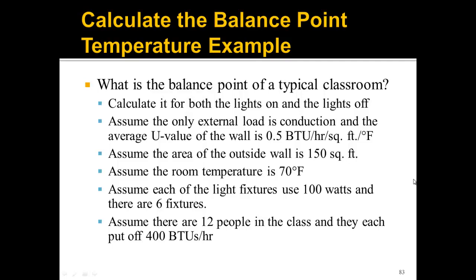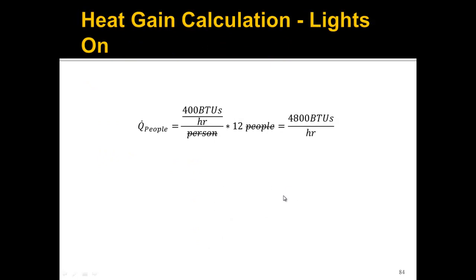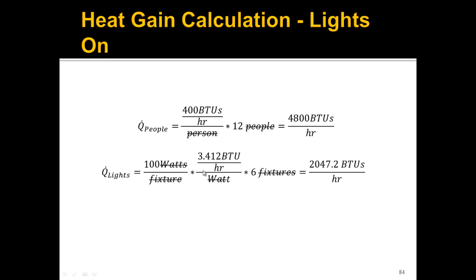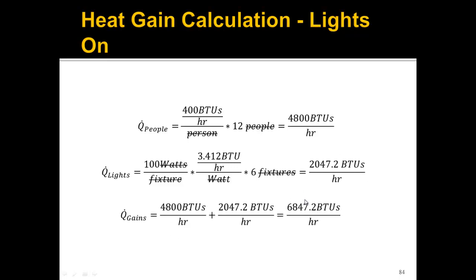Now that we know our assumptions, let's do the heat gain calculations for lights on. The people generate 400 BTU per hour per person times 12 people, giving 4,800 BTU per hour. The lights are 100 watts per fixture, converted to BTU per hour, multiplied by 6 fixtures. Adding people and lights together gives a total heat gain of 6,847.2 BTU per hour.